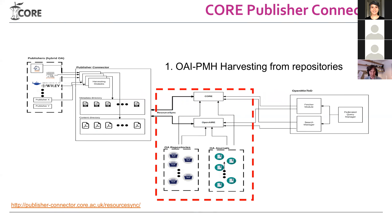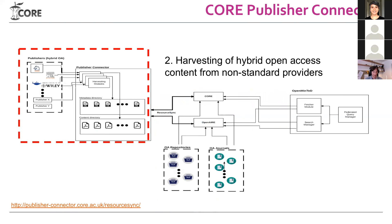Both CORE and OpenAIRE use OAI-PMH to harvest data — both metadata and content — from repositories. This is a protocol that has been there always, which repositories have supported for a very long time. There are some challenges, but this is basically what we use. However, we also wanted to reach out not only to open access repositories but also to big publishers.